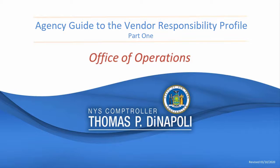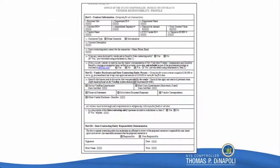Welcome to Part 1 of the New York State Comptroller's Bureau of Contracts Agency Guide to Completing the Vendor Responsibility Profile. The profile is used to document an agency's vendor responsibility review process. The following will discuss the proper way to fill out the form.